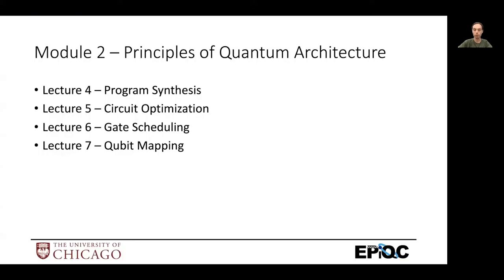In the previous module, we learned about qubits, quantum gates, and circuits, the building blocks of quantum algorithms. Now in Module 2, we're going to start looking at the physical devices that run these quantum algorithms and how that informs the architecture of our algorithms and compilers.